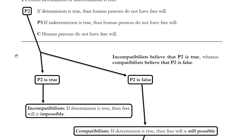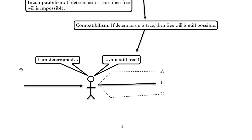Depending on what your reaction is to the second premise determines whether you're a compatibilist or an incompatibilist. Incompatibilists say P2 is true — determinism and free will are incompatible; if determinism is true, free will is impossible. But those who say P2 is false are compatibilists. They say that even if every action we take is determined by what has happened in the past — physical causes, the commands of God, fate, whatever — we can still be free.